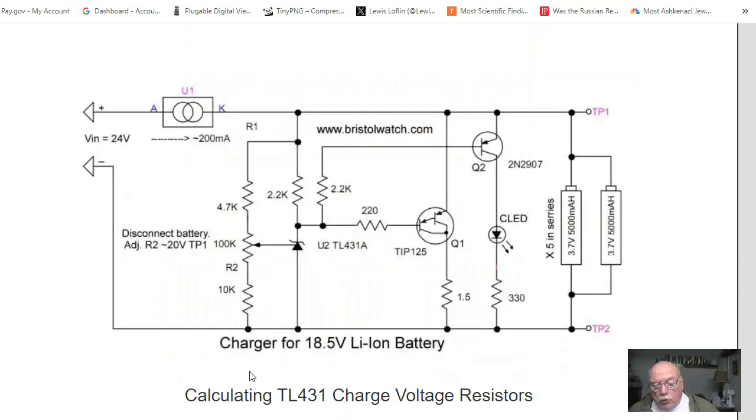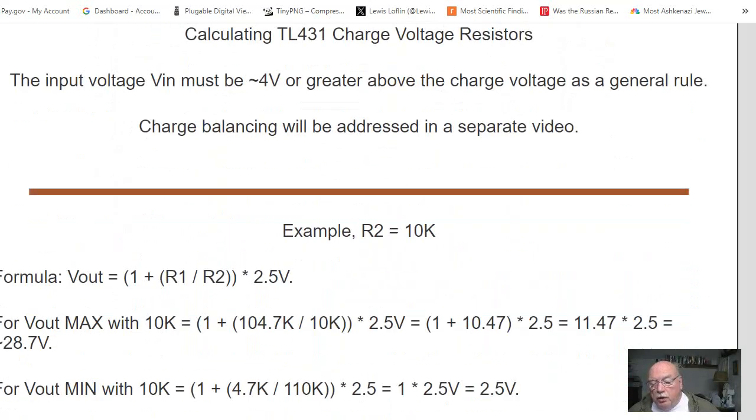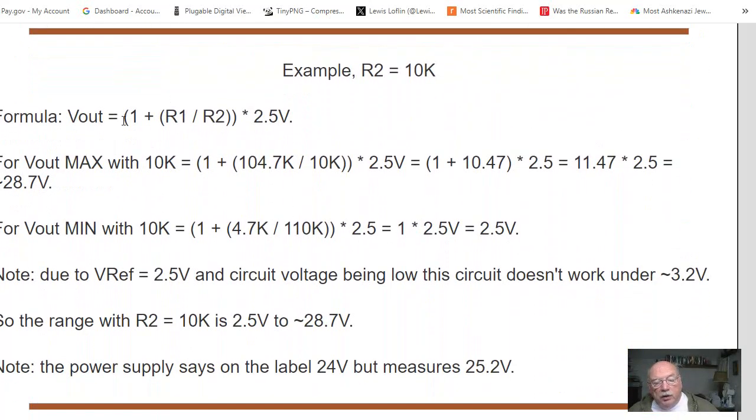All right, one last issue on the charging circuit is this resistor down here that was 33k before is now 10k to extend the range to a higher voltage. We have 24 volts input, of course. If we look at our formula, Vout equals 1, R1 being the 100k pot and 4.7. If you work through the formula, you have a range now of about 28.7 volts.